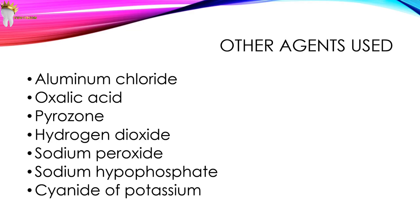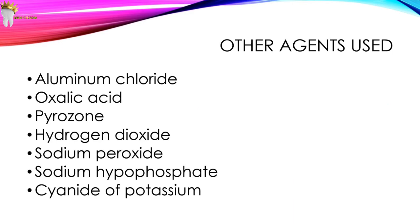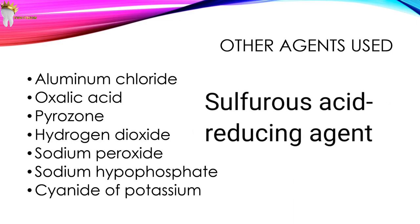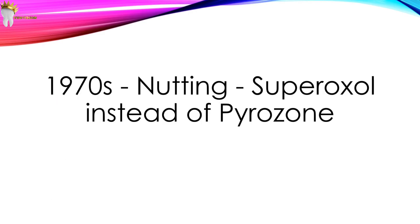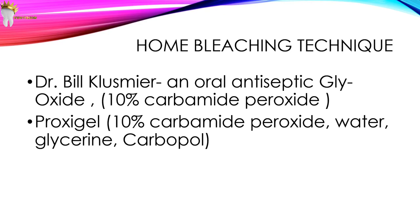In all of these, the active ingredient was an oxidizing agent that acted either directly or indirectly on the organic portion of the tooth. Only sulfurous acid was a reducing agent. In the late 1970s, Nutting began to use superoxal instead of pyrozone for safety purposes, and later combined it with sodium perborate to attain a synergistic effect.